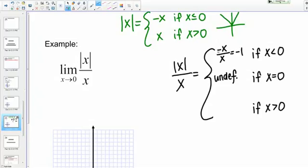Let's look at the case where X is greater than 0. Once again, I know from what I wrote in green that the absolute value of X equals X in this case, and then I still have my X in the denominator. I can reduce this to 1 since I'm not considering the case where X equals 0, which we've just considered as a separate case, undefined.